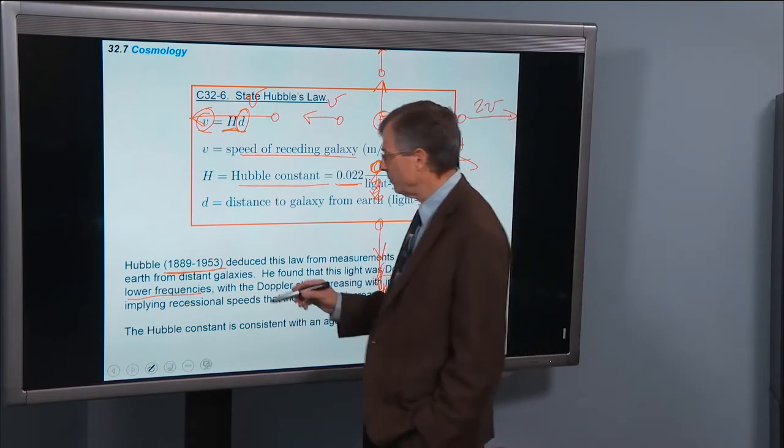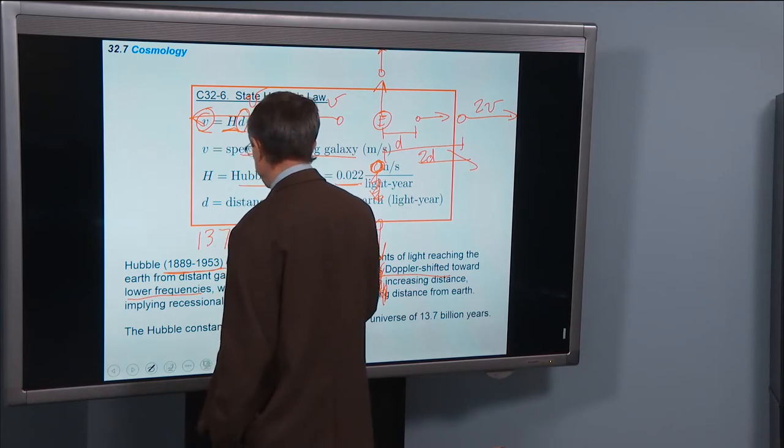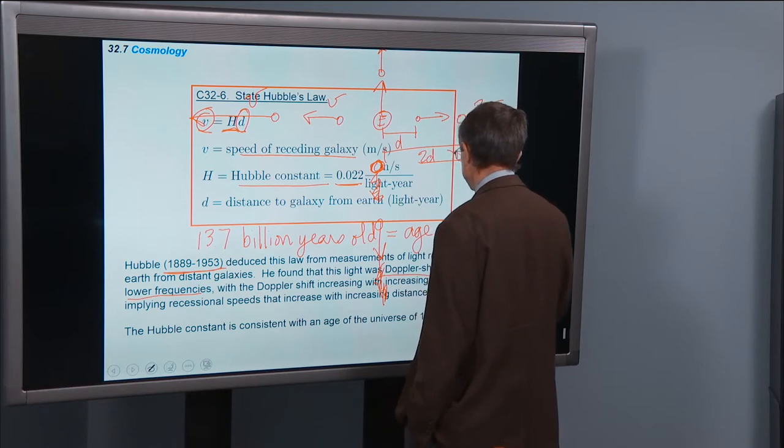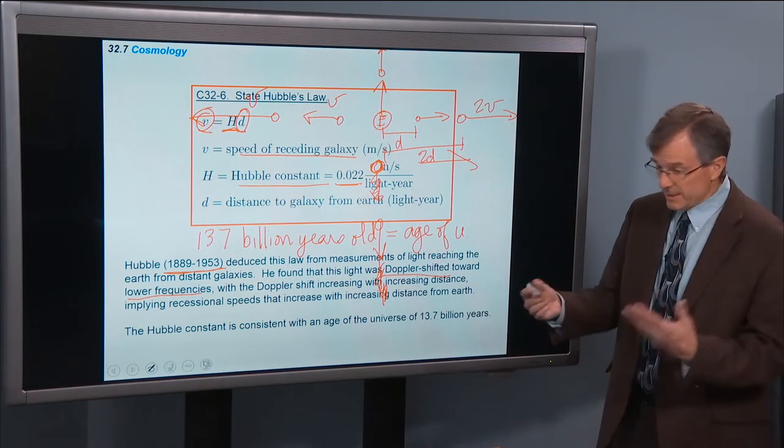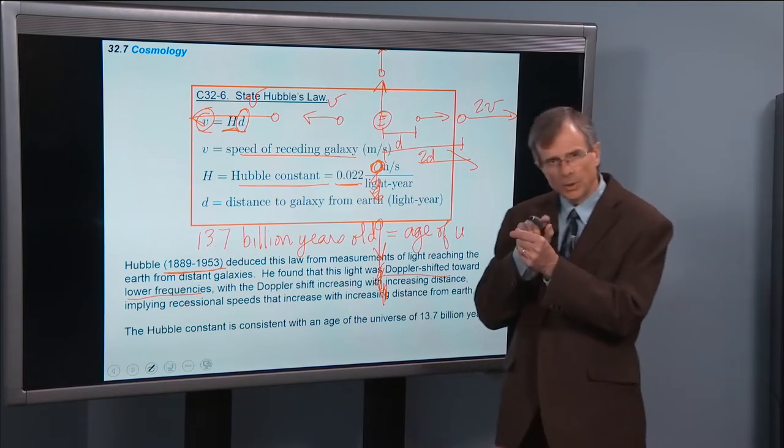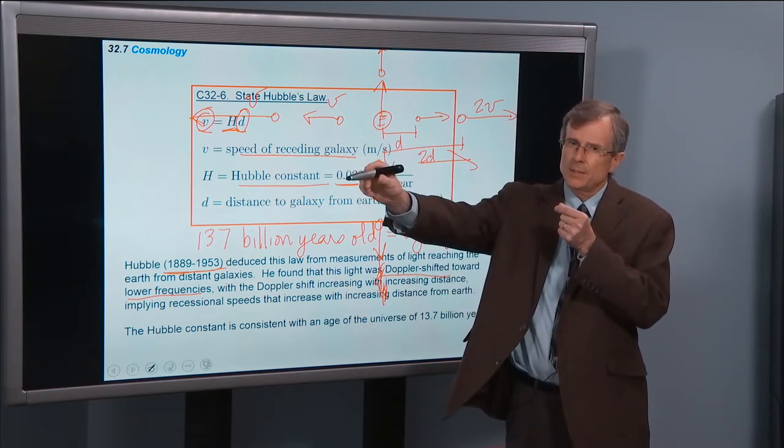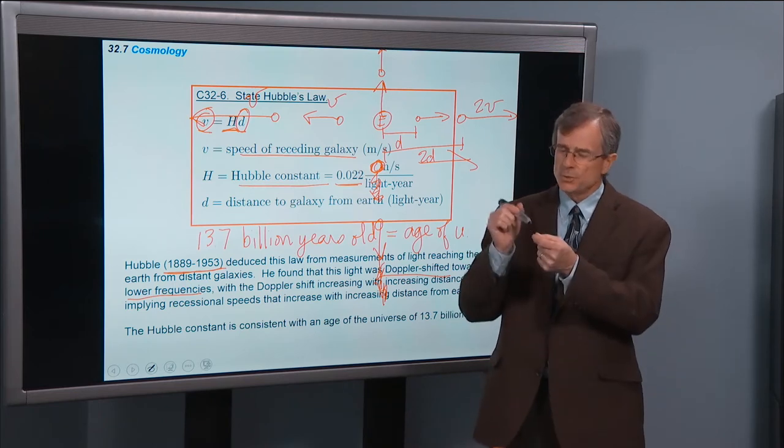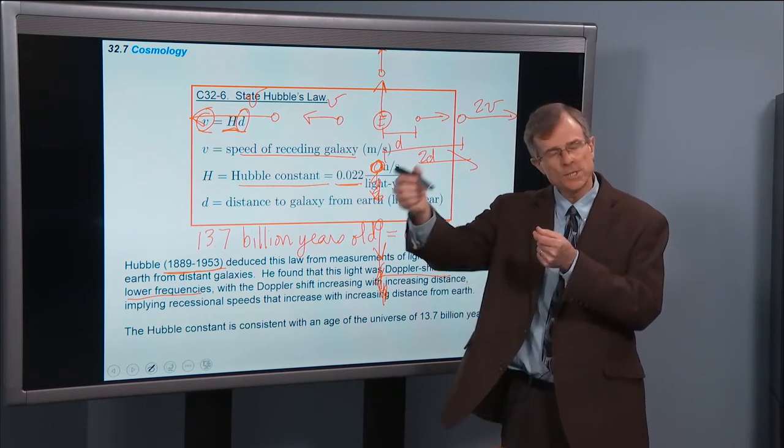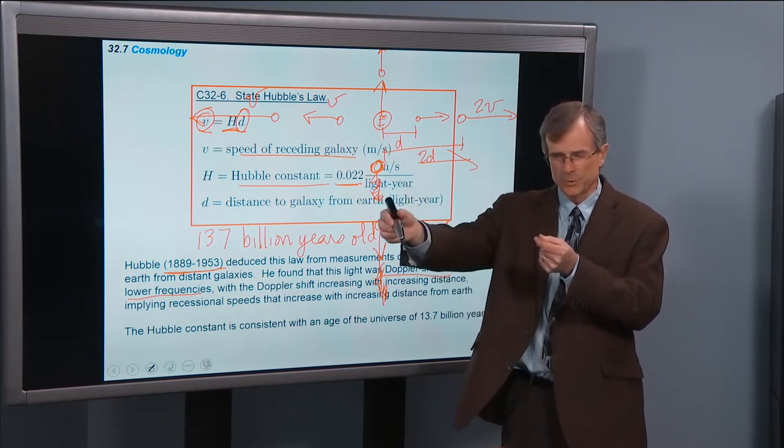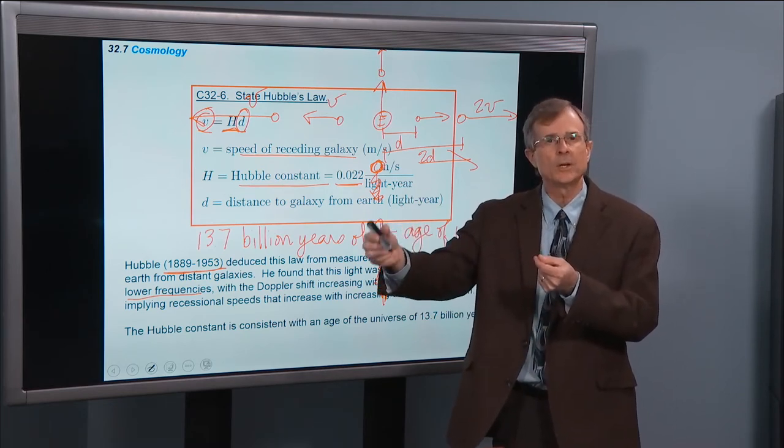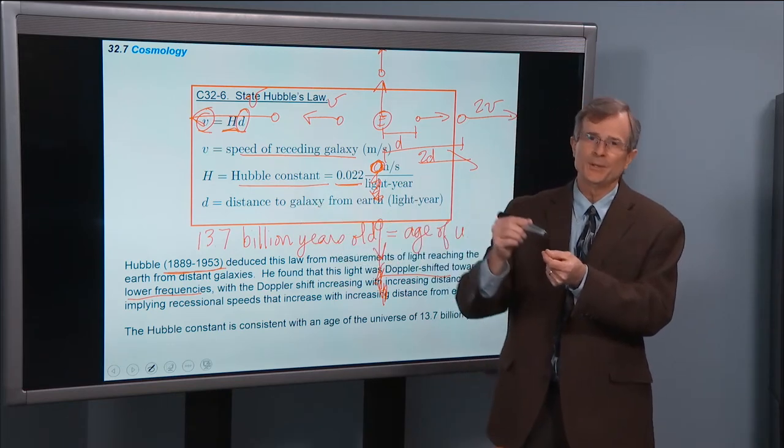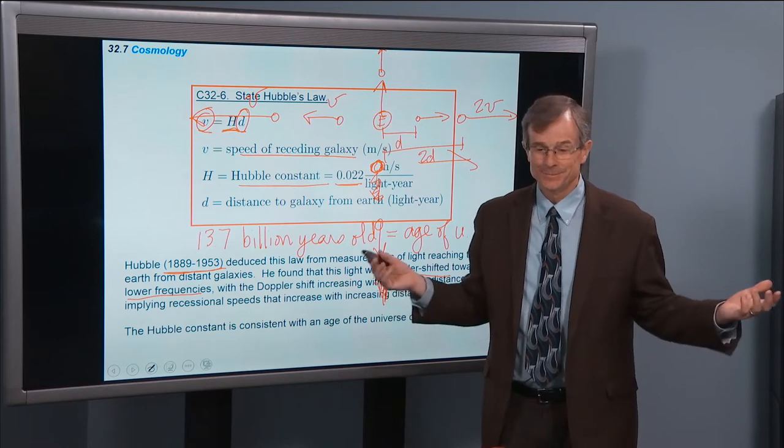The universe is 13.7 billion years old. That's the age of the universe, according to the latest measurements. That means that if you look 13.7 billion light years away, that you will be seeing the universe as it existed at the time the universe was first created. Because as you look further and further back in the universe, you're seeing things. It takes longer and longer for the light to travel from those locations to you. And you're seeing the universe as it existed earlier and earlier in its history. Once you get out to 13.7 billion light years, you're at the place where it took light 13.7 billion years to get to you. And that's how long the universe has existed.